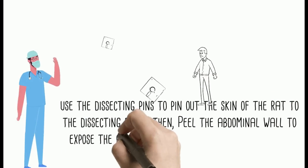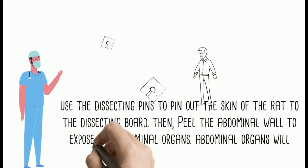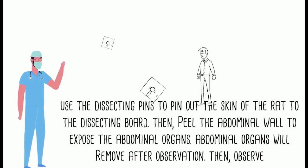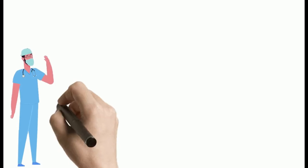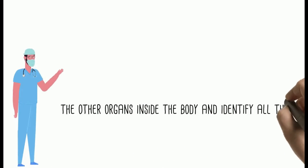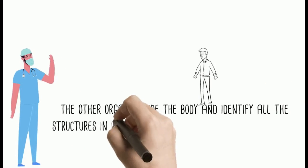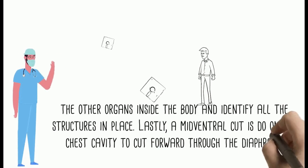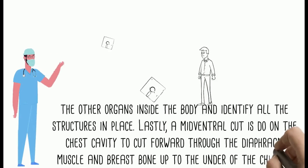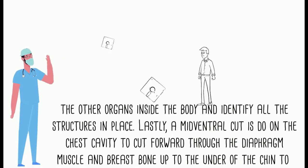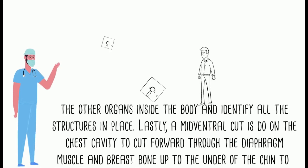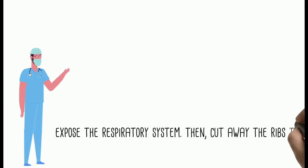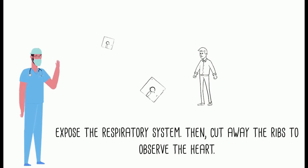Peel back the abdominal wall to expose the abdominal organs. The abdominal organs will be removed after observation. Then observe the other organs inside the body and identify all structures in place. Lastly, a mid-ventral cut is made on the chest cavity, cutting forward through the diaphragm muscle and breastbone up to the underside of the chin, to expose the respiratory system. Then cut away the ribs to observe the heart.